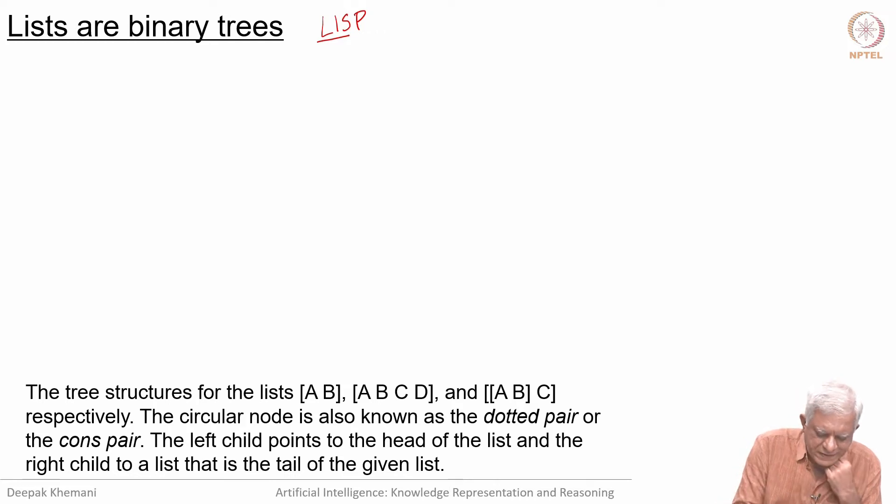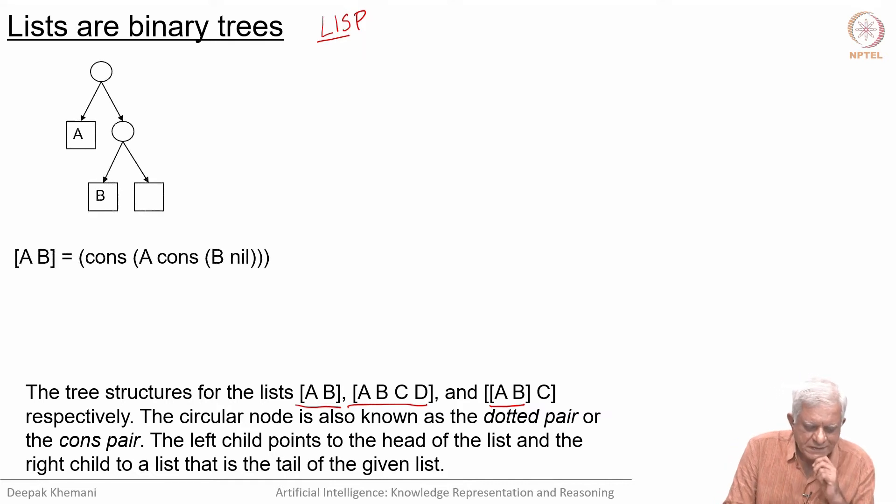We look at three lists here: a simple list containing two elements A and B, a slightly longer list containing four elements A B C D, and third, a list containing two elements, but one of them is itself a list which is [A B]. In the diagram that we are drawing here, a circular node is represented as a dotted pair or a cons pair.